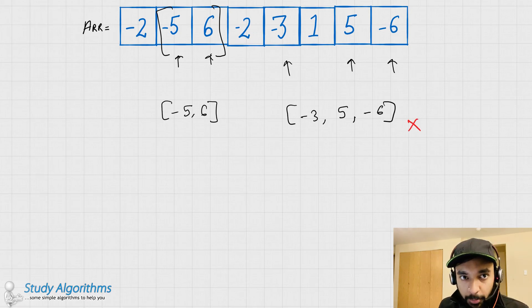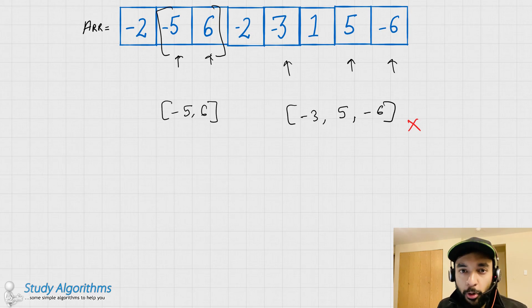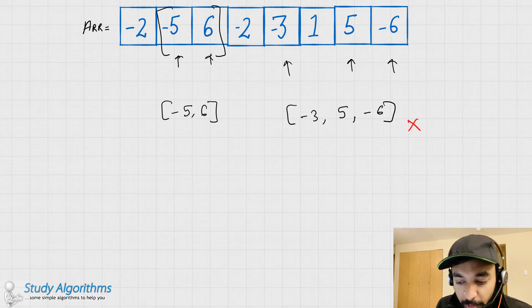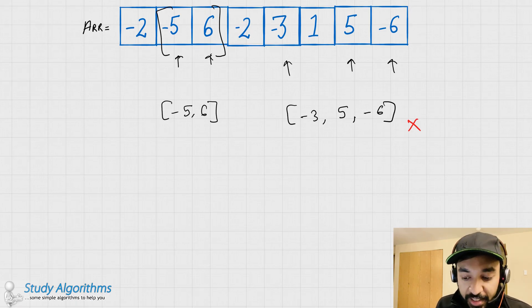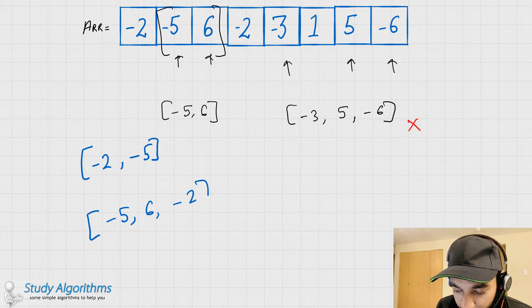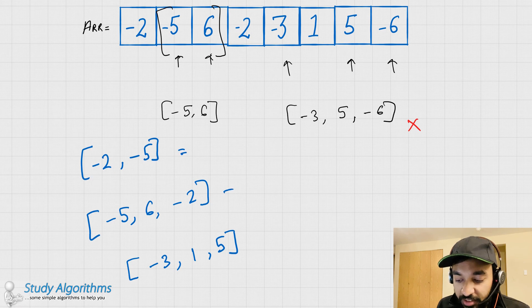As per the problem statement, you need to find out the maximum sum possible that can be formed using all the possible contiguous subarrays. Let us have a look at some of the possible contiguous subarrays that you can form with this example. Note that all of these are contiguous subarrays, and each of these contiguous subarrays has some sum.